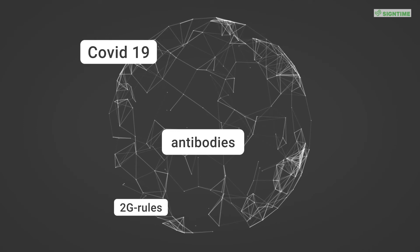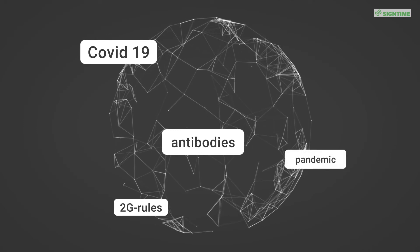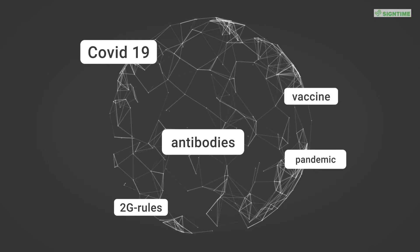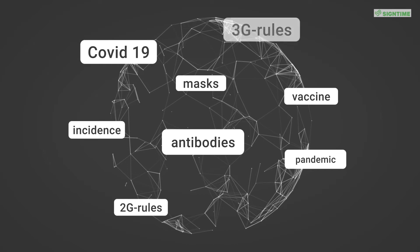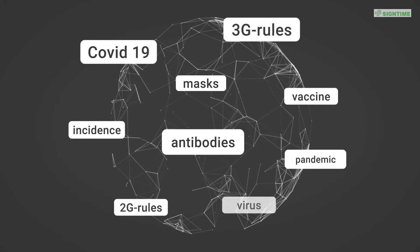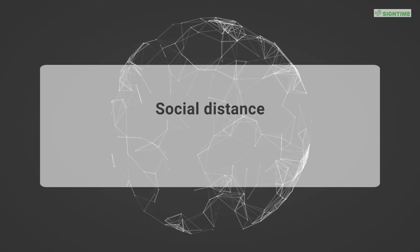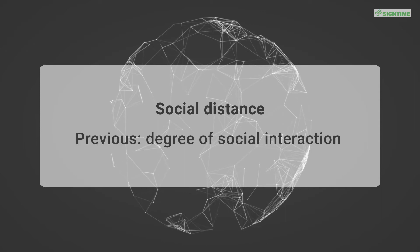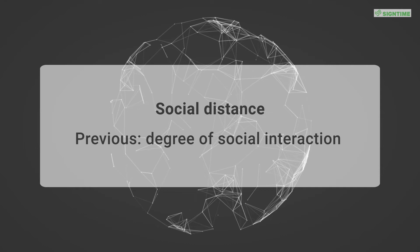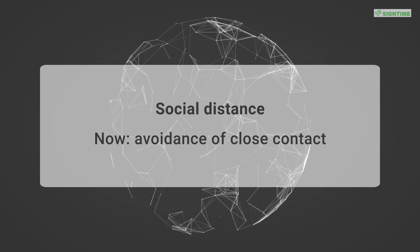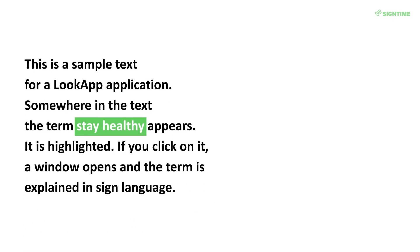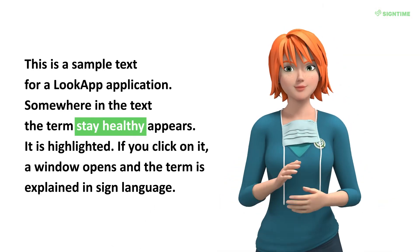Just imagine you need to access information on a website that is relevant for you — let's say about the latest COVID rules and regulations, something we checked very often because it changed very often. Usually, in such a text, there are items that are not easy to understand or have a specific meaning, like 'social distance.' During a pandemic, it means the avoidance of close contact with other people. Now you can implement our software LookApp as a JavaScript on the server. By doing this, the end user can point to a word and gets a description in his or her sign language.